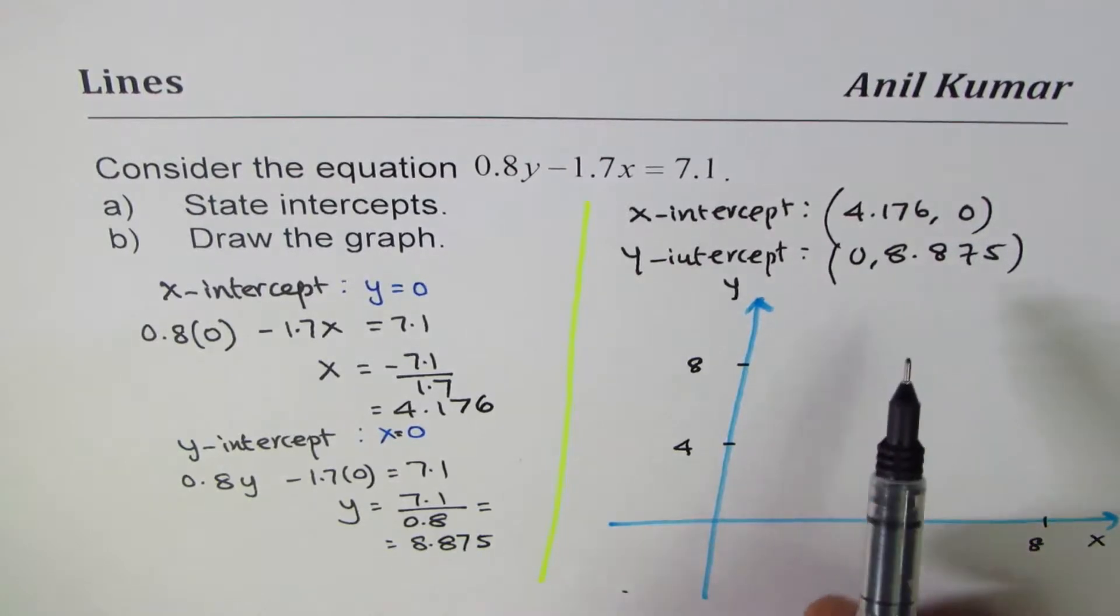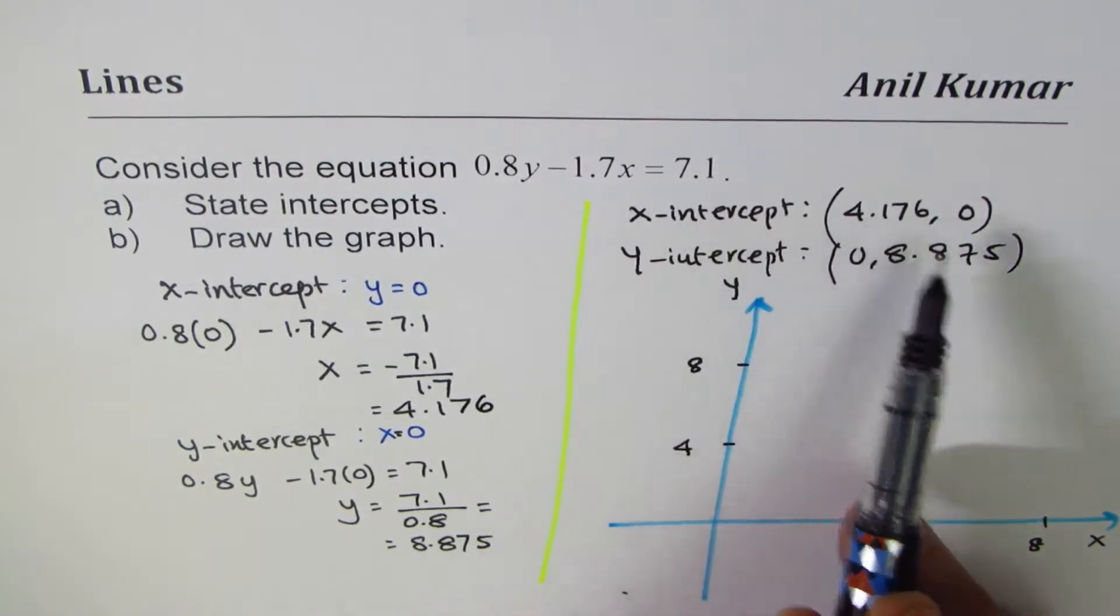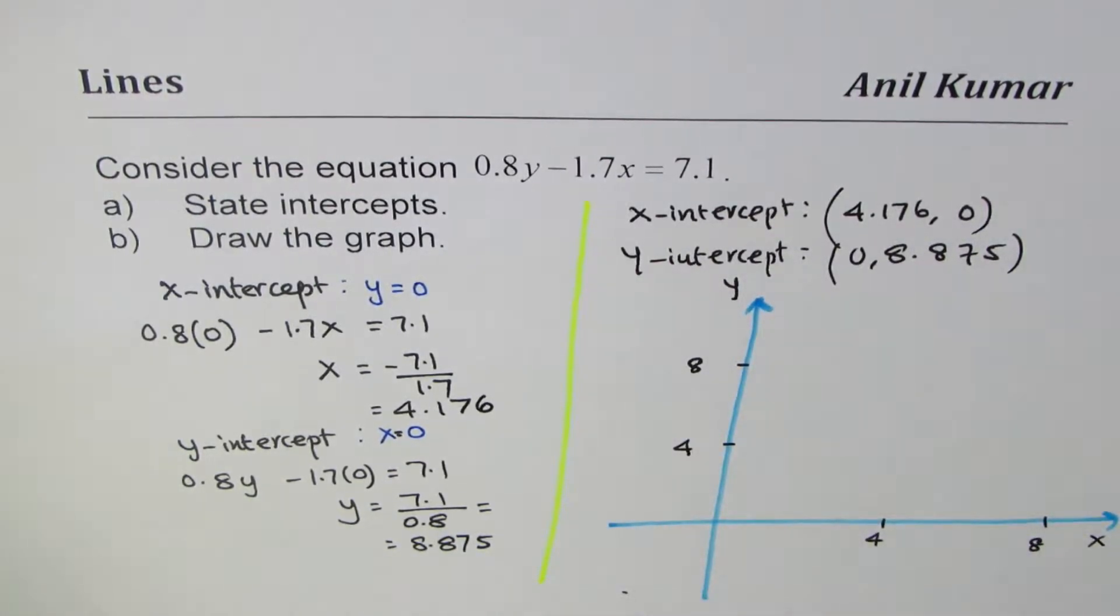So the two intercepts are: one at 4.176, which really means it is slightly more than 4, kind of here. And 8.875 is kind of very close to 9.